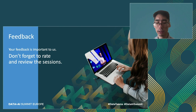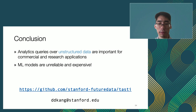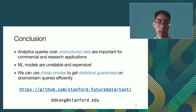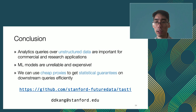In conclusion, analytics over unstructured data is important for both commercial and research applications. But machine learning models are unreliable and expensive. In my research, I show that we can use cheap proxies to get statistical guarantees on downstream queries efficiently. All of our research code is or will be made open source, and links to the work described in this talk are available. Feel free to reach out via email if you'd like to discuss or collaborate. Thank you for your time.